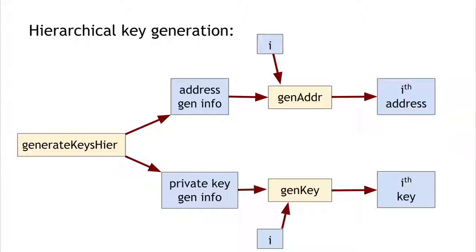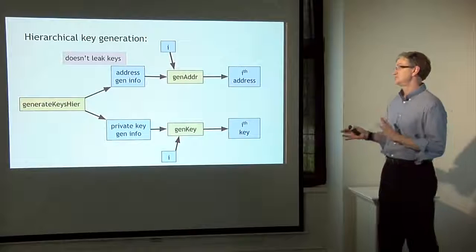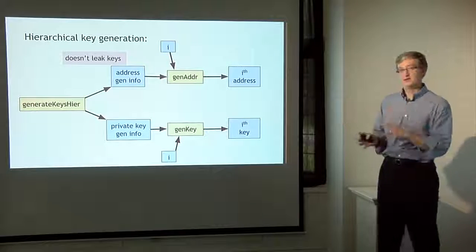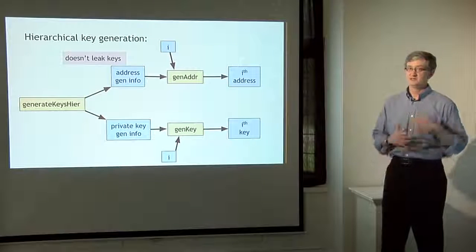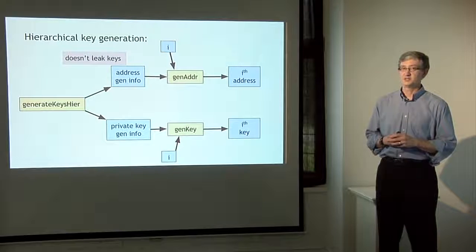This is useful because of two important properties. First, the i-th address and the i-th key match up — a coin transferred to the i-th address is spendable by someone who knows the i-th key, just like a regular address and key. Second, there's a security property: the address generation info doesn't leak any information about what the keys might be. That means it's safe to give the address generation info to anybody. Not all digital signature schemes support hierarchical key generation, but the one used by Bitcoin — ECDSA — does support it.